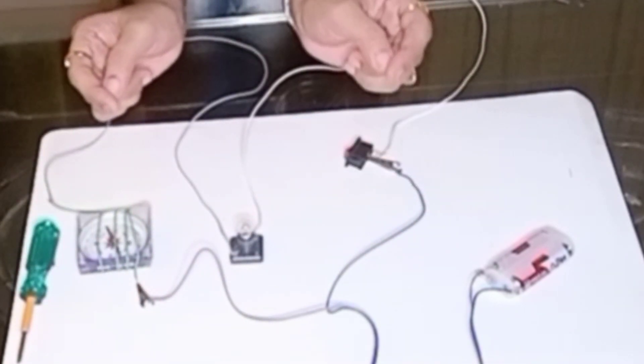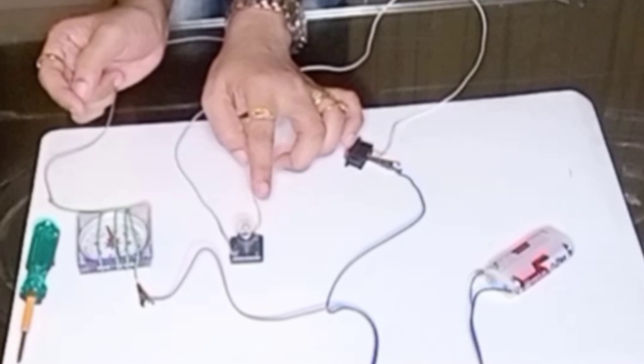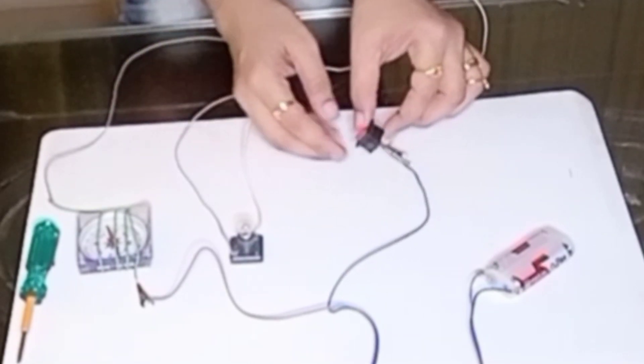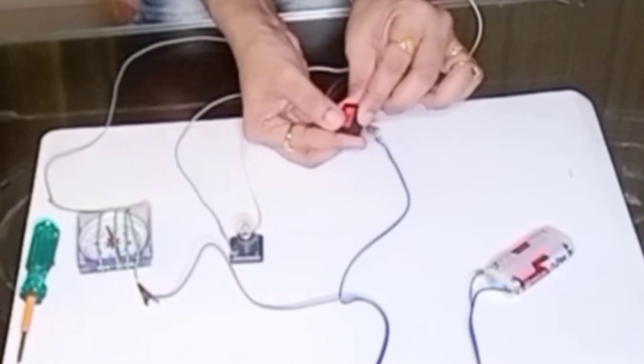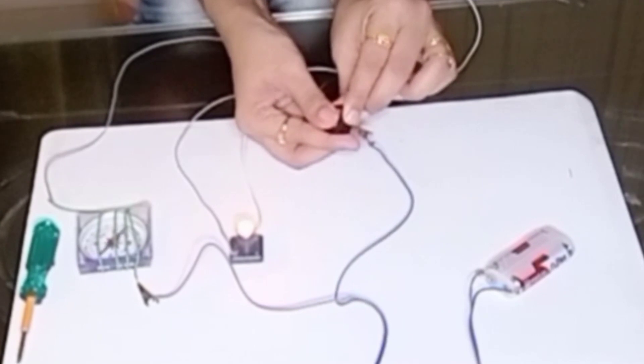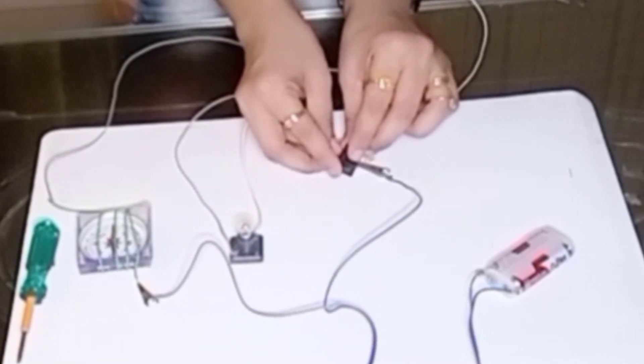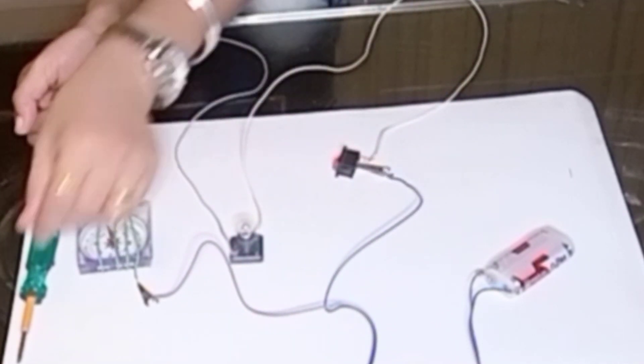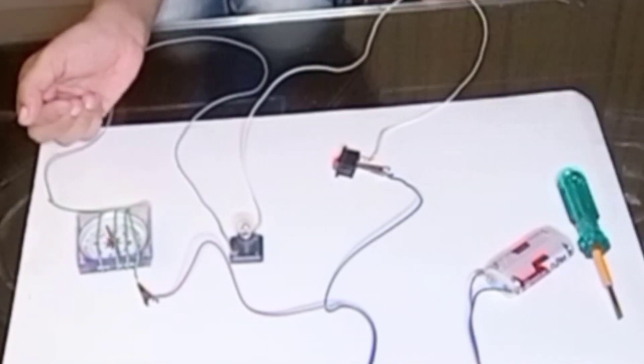Then I am going to check again whether my bulb is glowing or not. I will just switch it on. Can you see my bulb is glowing? Then I will switch it off. I will keep this aside. But did you observe the movement of the compass?